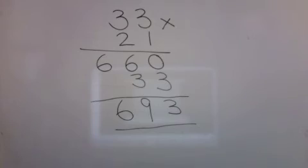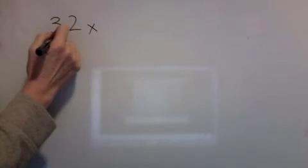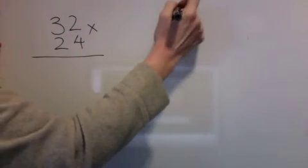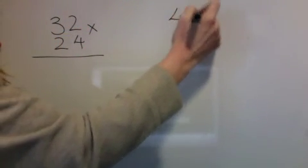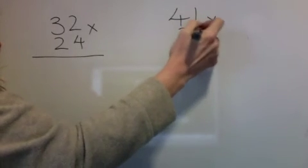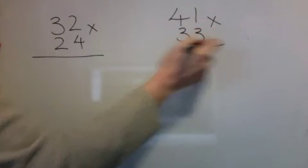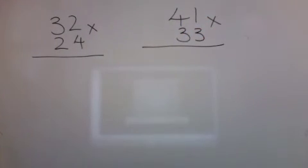Let's try two more and then you can do the ones in your book. Thirty-two times twenty-four. And forty-one times thirty-three. Have a go — pause the video and then see if you got them right.